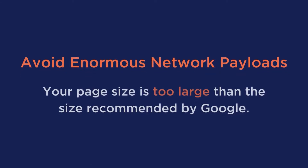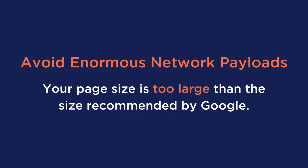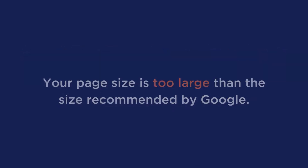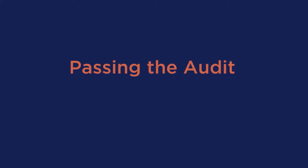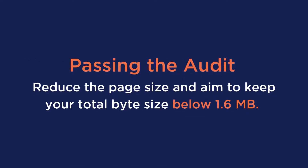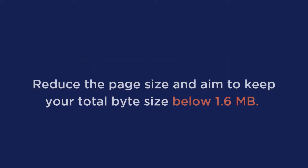The Avoid Enormous Network Payloads warning means that your page size is too large — larger than the size recommended by Google. Heavier pages are much slower to render content because there's so much more data that has to be downloaded. This message will be triggered when the total page size is over 1600 kilobytes, so you need to reduce the page size and aim to keep your total byte size below 1.6 megabytes.